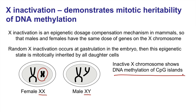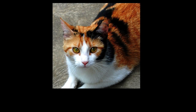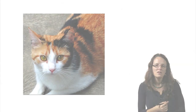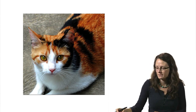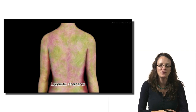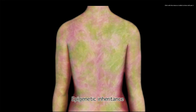X inactivation can be observed visibly in the coat colour of calico cats. Calico cats have coat colour genes on the X chromosome — either the ginger version or the black version. The choice is made early in development to have the ginger allele active or the black allele active, while the other chromosome is silenced. This results in cats with a mottled appearance based on when that choice of which X to inactivate was made early in development. This is also true in humans — if we had a coat colour marker, you would see patches of different skin colour, just as you see in female cats.